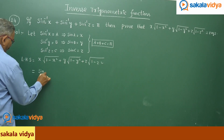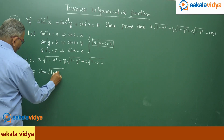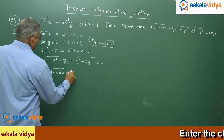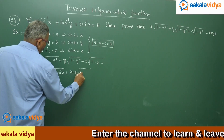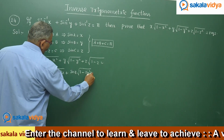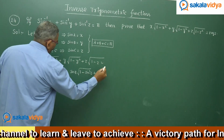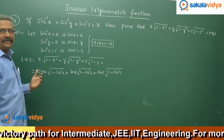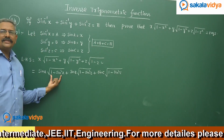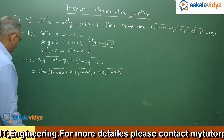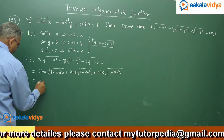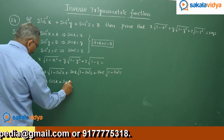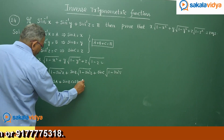Replacing x = sin A, y = sin B, z = sin C, the expression becomes sin A · √(1 − sin²A) + sin B · √(1 − sin²B) + sin C · √(1 − sin²C). Using the important result that √(1 − sin²θ) = cos θ, this simplifies to sin A · cos A + sin B · cos B + sin C · cos C.